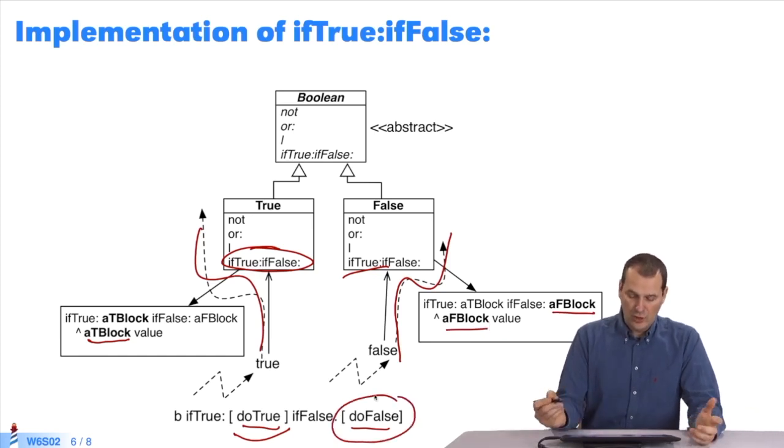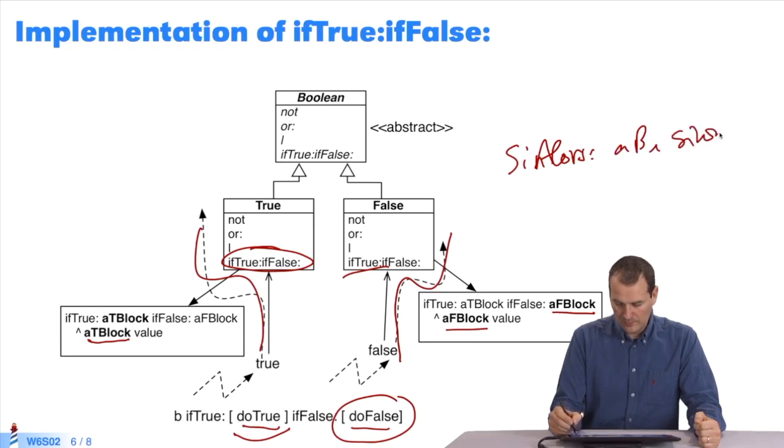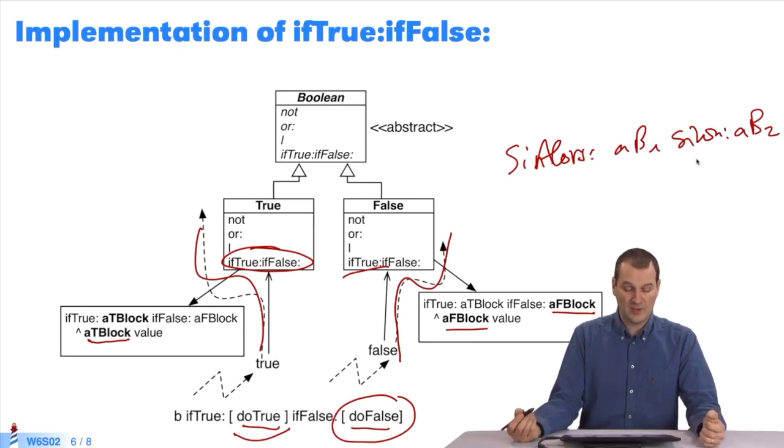You cannot test this by putting a breakpoint in if-true, if-false. It's optimized, and the system won't accept it. But what I do suggest you try is implement in the same manner if-false or if-true. If-true, a block one, and if-false, a block two. Then implement them. Use a breakpoint and experiment.